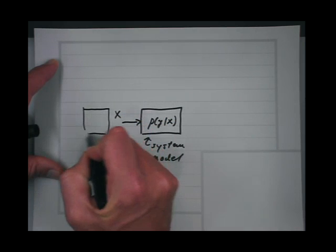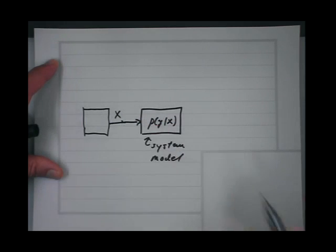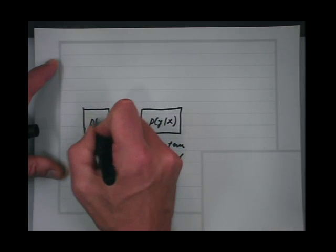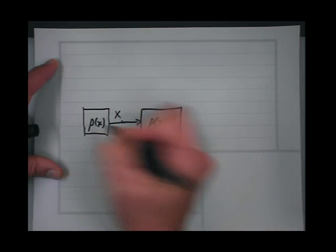What we also have is that x isn't just anything — x is generated with some prior distribution we call p of x.